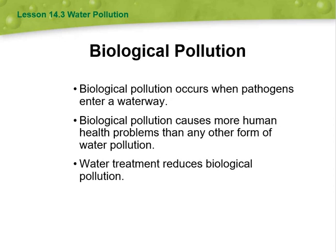Then we have biological pollution. Biological pollution is the introduction of harmful organisms or substances into the environment. This can include invasive species, pathogens, or excessive nutrients that disrupt the natural balance of ecosystems. It can have detrimental effects on biodiversity, water quality, and overall ecosystem health. It's crucial to prevent and manage biological pollution to protect our ecosystems and ensure their long-term sustainability.